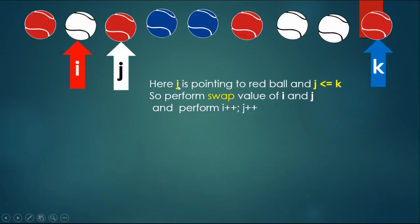Here j is pointing to a red ball and j less than or equal to k, so perform swap of value of i and j, and perform i++, j++.